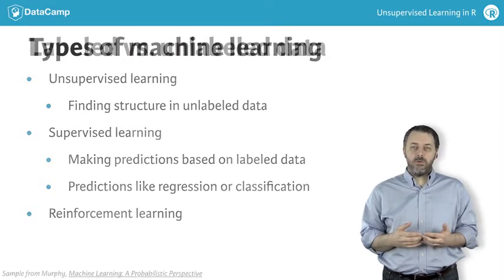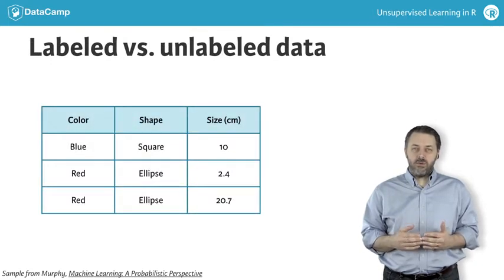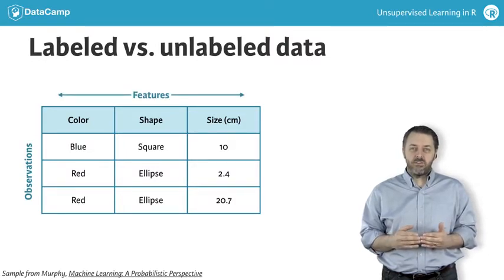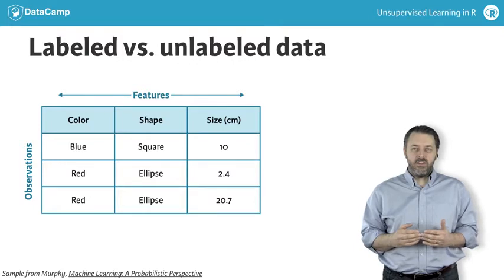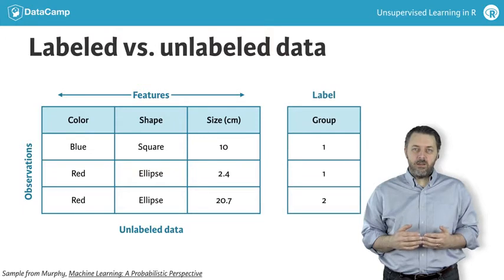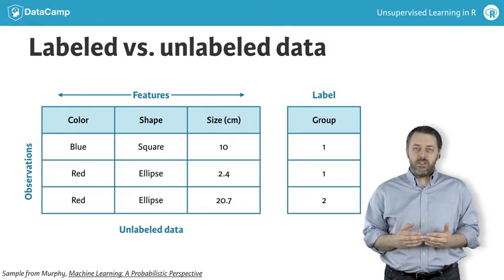Here's a quick example of the difference between labeled and unlabeled data. The table on the left is an example with three observations about shapes, each shape with three features represented by the three columns. This is an example of unlabeled data. If an additional vector of labels is added, like the column of labels on the right-hand side, labeling each observation as belonging to one of two groups, then we would have labeled data.